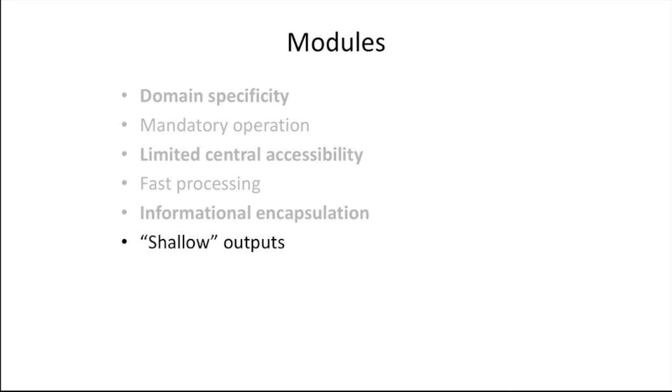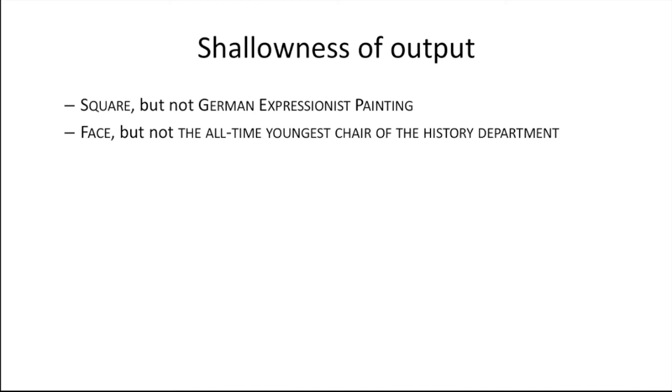They also tend to have shallow outputs. For instance, what a parsing module outputs to the central system is a mere sketch of the structure and overall content of the sentence you are hearing, rather than an elaborate, precise, and fully worked out interpretation. Something similar would be said of the early visual system. So a visual module could deliver the content 'this is a square,' but not the content 'this is an instance of a German expressionist painting.' And a module can output the recognition of a face, but not the content 'the all-time youngest chair of the history department.'